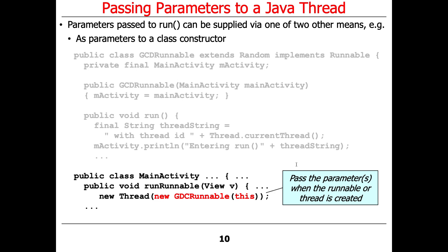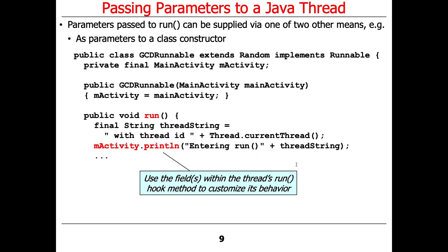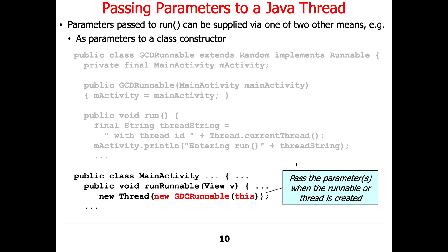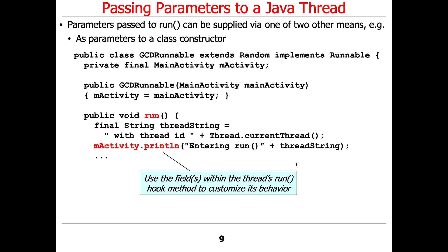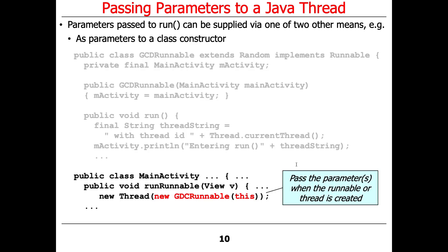Here's what the code looks like when you actually use it with this model. Here's the MainActivity — this is the Android-ism. We have a method called RunRunnable. When I click the button on the GUI that says RunRunnable, it's connected to this method. This method makes a new Thread that will run a new GCDRunnable associated with this activity — that's what 'this' is in this context. That's how we pass the activity into the GCDRunnable so it can be accessed when the thread runs in the background.